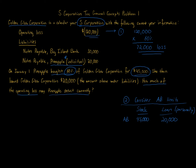For loss limitation purposes, we join the stock basis and the loan basis together. The stock adjusted basis is $45,000 and the personal loan basis is $20,000, giving a total loss limit of $65,000. Even though Pineapple has $72,000 of allocated loss, she can only deduct $65,000 currently. That is the answer: $65,000 of loss can be deducted.